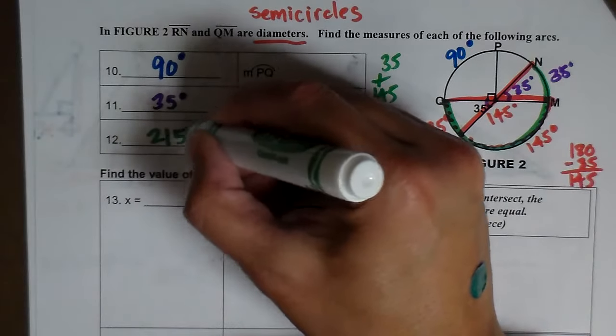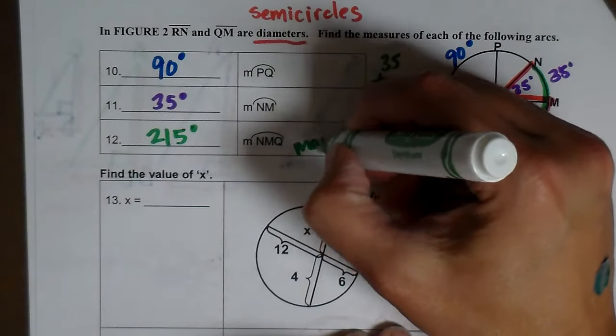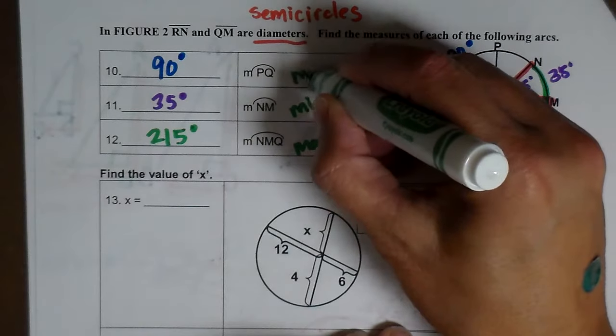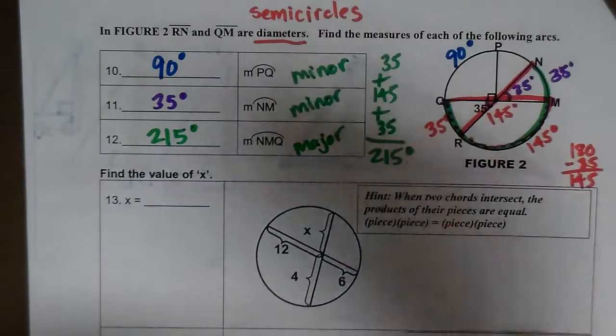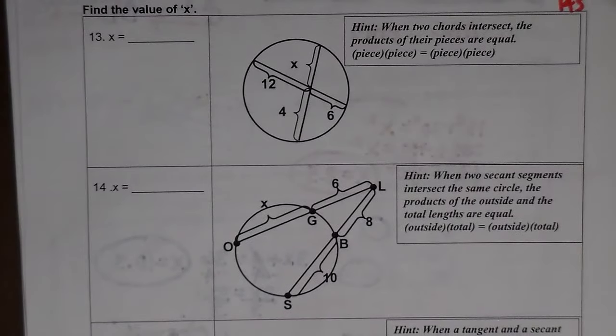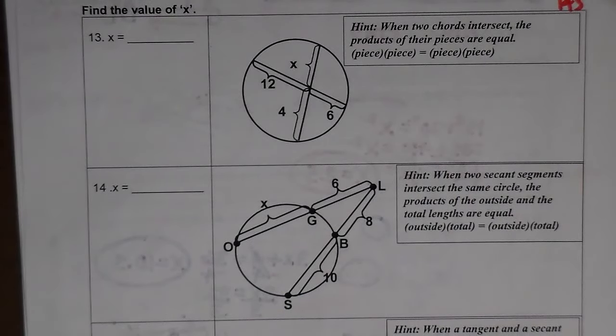And this is a major arc. And these are minors. Remember, a major arc is an arc that has a measure greater than 180 degrees. Okay. So let's look at these. Let's try to finish these up.